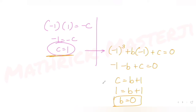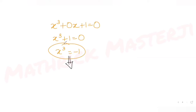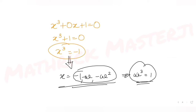With b equals zero and c equals one, the equation becomes x cubed plus zero times x plus one equals zero, which simplifies to x cubed plus one equals zero, giving x cubed equals minus one. The three roots of this are x equals minus one, minus omega, or minus omega squared, where omega is the complex cube root of unity and omega cubed equals one.